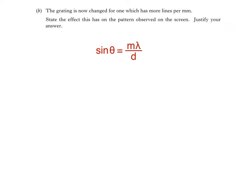If we're only changing the number of lines per millimetre on the grating, then m and wavelength lambda are constant. If we have more lines per millimetre, then the distance d between the lines will decrease, causing sine theta to increase. This would have the effect of also increasing the angle theta between a central maximum and the other maximum. In other words, the maxima are now spaced farther apart.